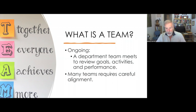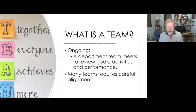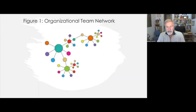Other teams are ongoing teams that are constantly present in an entity, in a corporation, a factory, or whatever, such as a department team that meets regularly to review goals, activities, and performance. An organization with many teams requires careful alignment, because you incur on redundancies — when many people do the same thing — which is costly and not effective at all. As teams and individuals link with other teams, the principle of developing understanding and trust will apply.